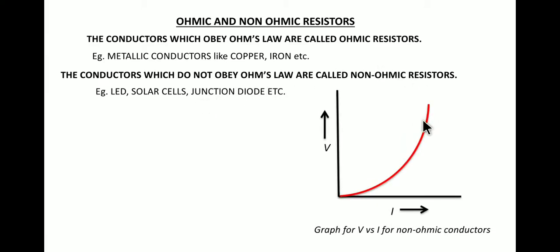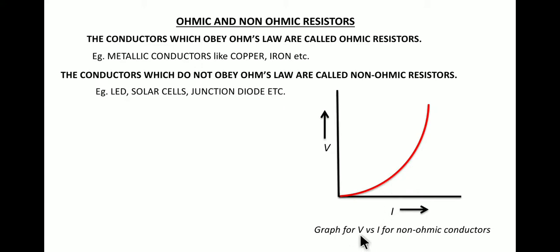Now let's look at what the graph of non-ohmic resistors looks like. On this graph, as you increase the current on the x-axis and voltage on the y-axis, the voltage keeps increasing, but after some time the increase in current does not remain proportional — the voltage keeps increasing while the rate of current increase slows down. This is the graph of voltage versus current for non-ohmic conductors.